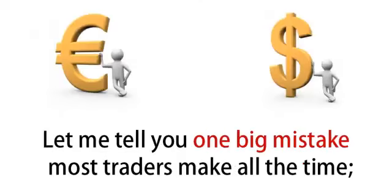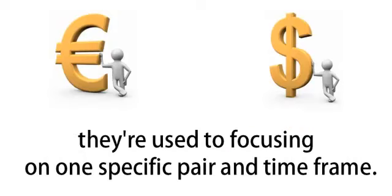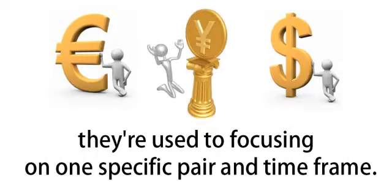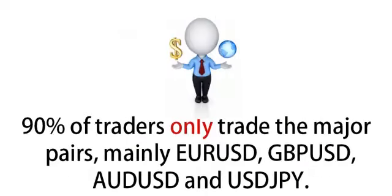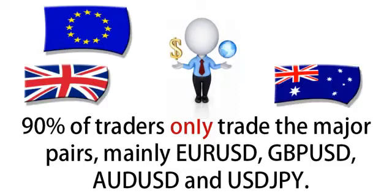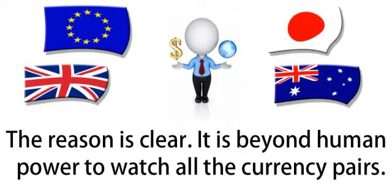Let me tell you one big mistake most traders make all the time. They're used to focusing on one specific pair and time frame. 90% of traders only trade the major pairs, mainly the Euro, the Cable, the Aussie and the Yen. The reason is clear: it's beyond human power to watch all the currency pairs.